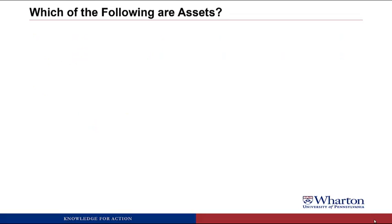Now we're going to practice applying these criteria to figure out which of the following items would be assets. I'm going to give you a number of items, and for each one I want you to try to figure out whether it's an asset or not. If it's an asset, try to give me the account name and what the dollar amount would be. If it's not an asset, then try to figure out what criteria would cause it to not be an asset.